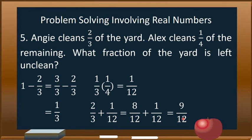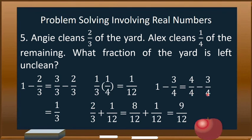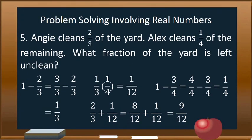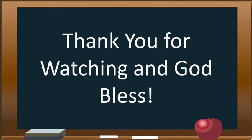9/12 is the fraction of the yard that is cleaned. We reduce 9/12 to its lowest term, which is 3/4. Then we subtract from 1: 1 minus 3/4. Renaming 1 as 4/4, we get 4/4 minus 3/4 equals 1/4. Therefore, the fraction of the yard that is left unclean is 1/4. Thank you for watching and God bless.